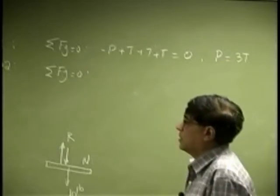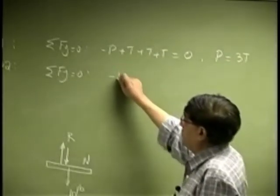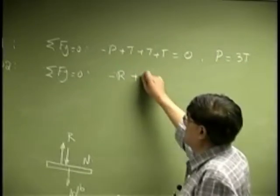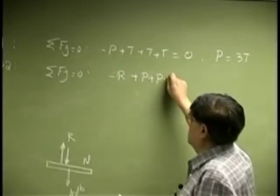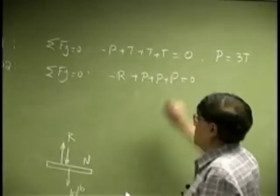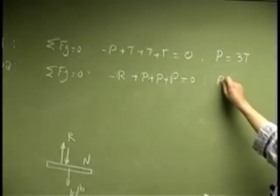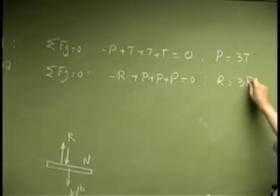Again, you get negative R plus P plus P plus P then adds to 0, so it gives you R as 3P.